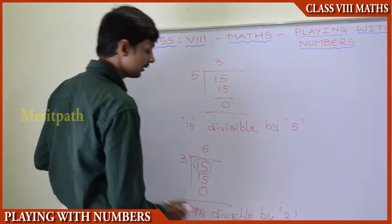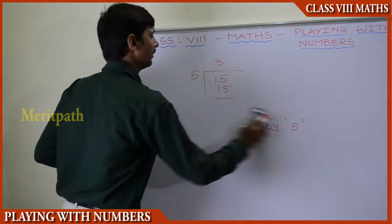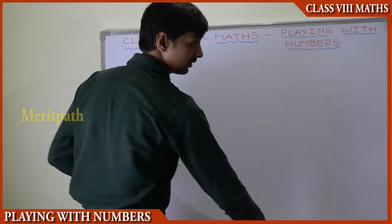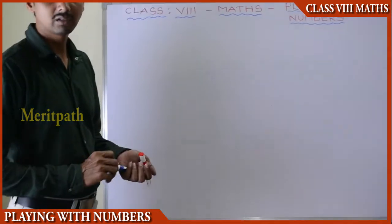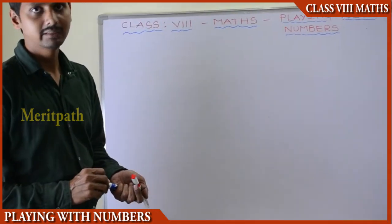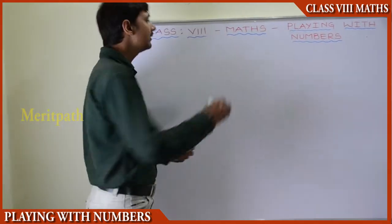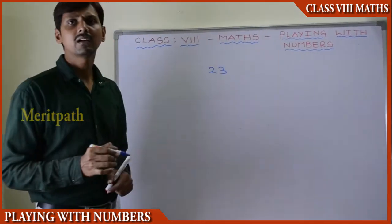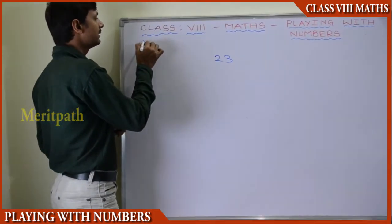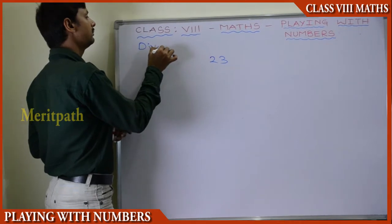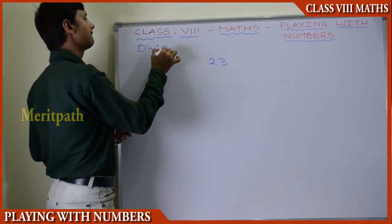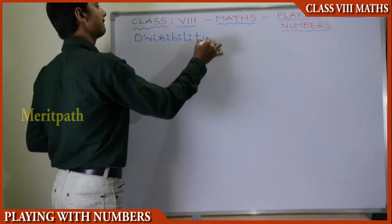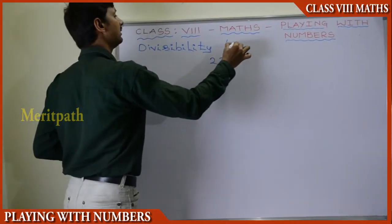Let us take some other number, like a two-digit number. Can you choose any one of the two-digit numbers? We have taken 23. Let us see if it is divisible by 10 or not — divisibility by 10.